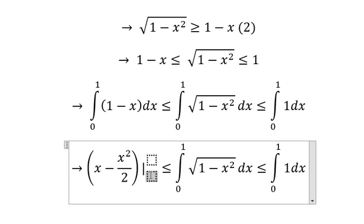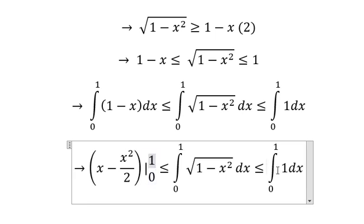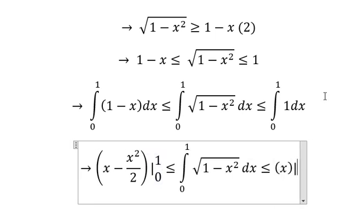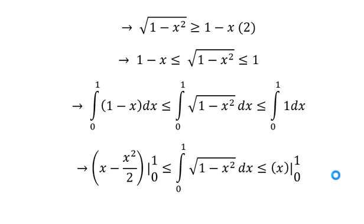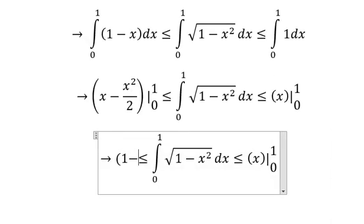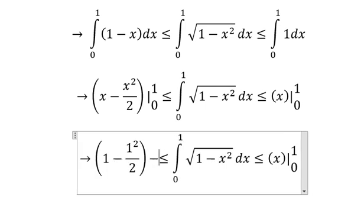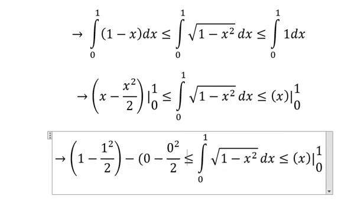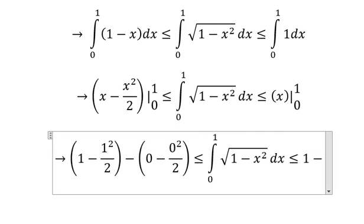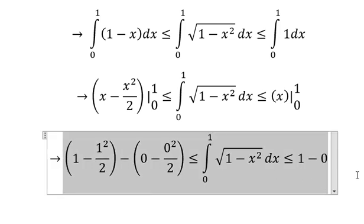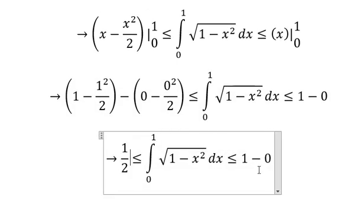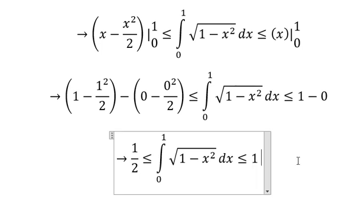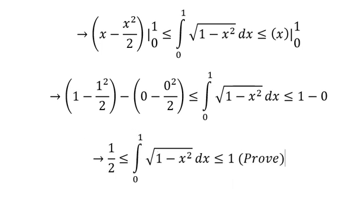The integration gives us s minus s squared over 2, with bounds from 0 to 1. For the right side, we have s from 0 to 1. If we simplify, we get 1 over 2 on one side and 1 on the other. That is the final answer. Thank you for watching.